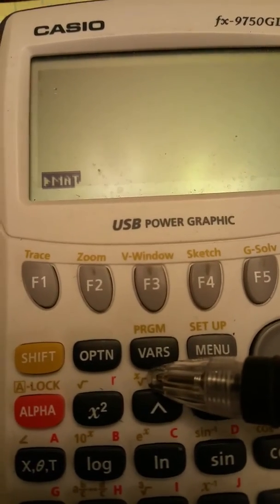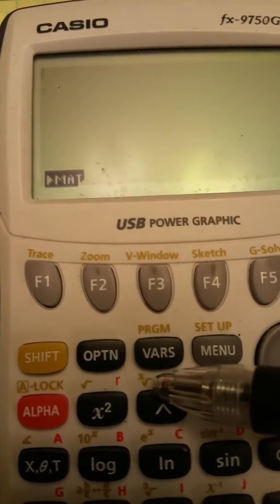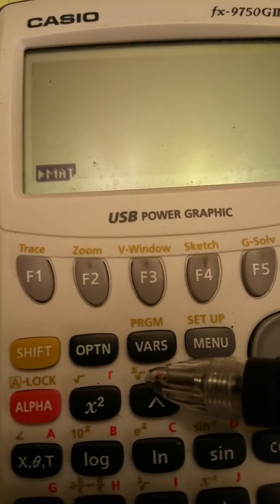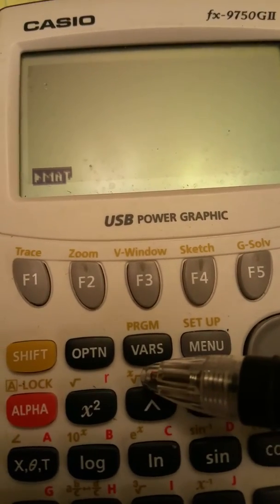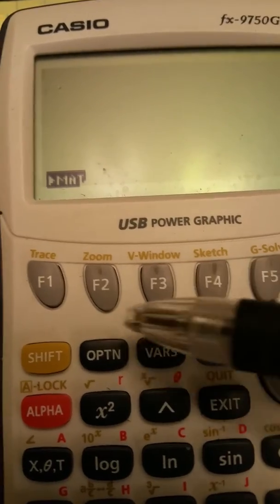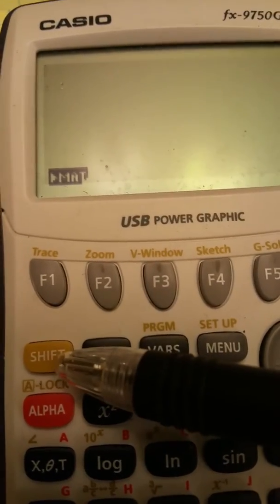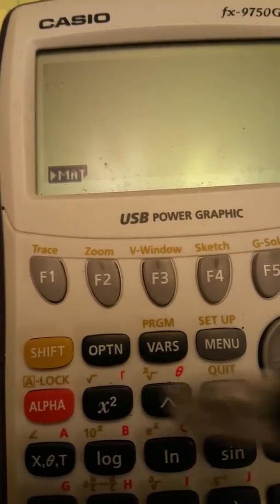This is that key, x root of. Now, on the other hand, it's not really on the key. It's actually above the key in gold. So what you do is you hit the gold colored shift key before you hit that.